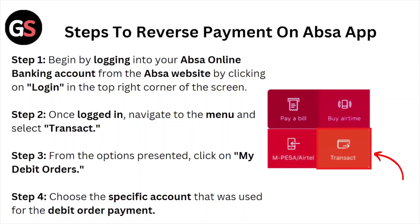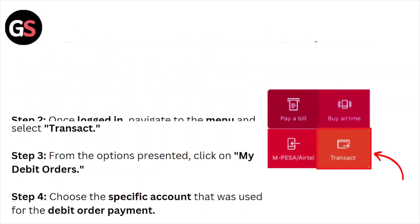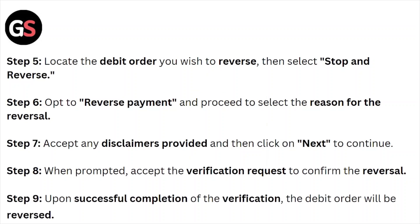Step number two: once logged in, navigate to the menu and select Transact. Step number three: from the options presented, click on My Debit Orders. Step number four: choose the specific account that was used for the debit order payment.